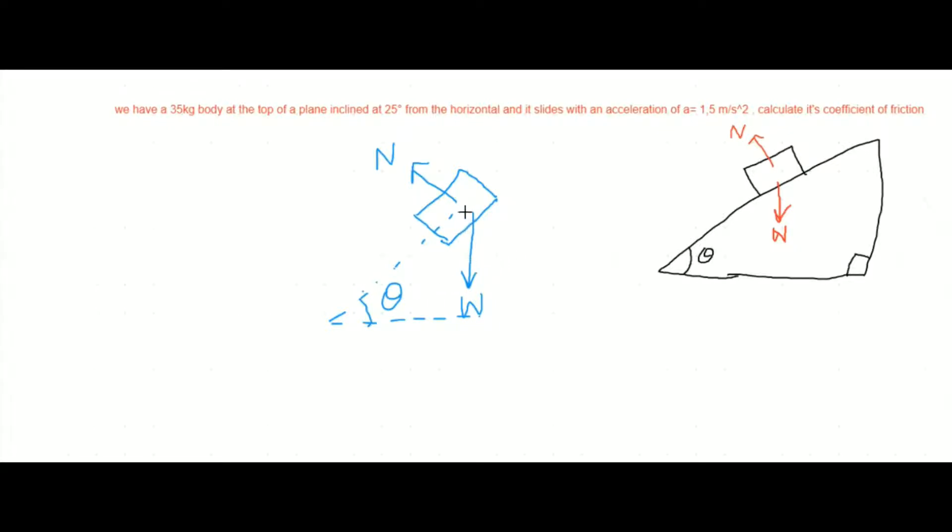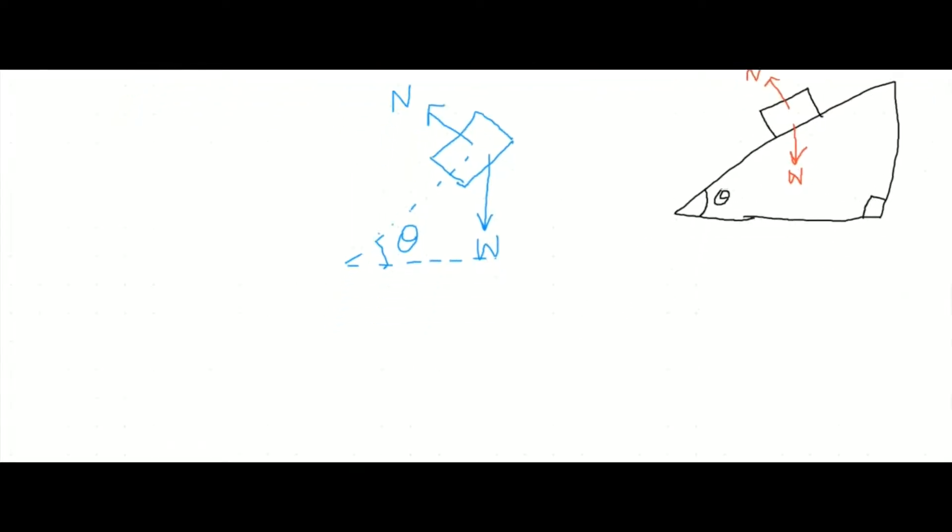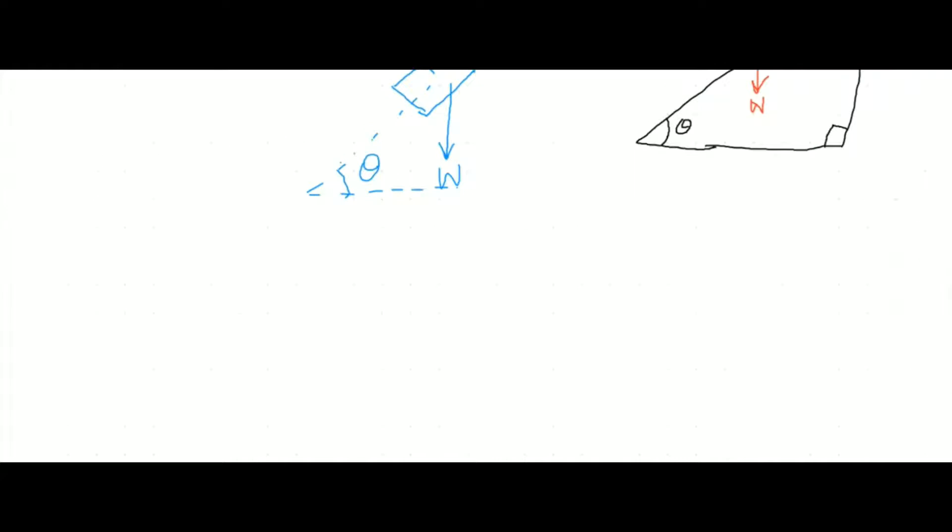Now since we have to equate the forces in different directions, that is horizontal and vertical, first we need to factorize this W in two forms which is horizontal and vertical components. Since this is an angle of theta, along the plane we will have a force of W sin theta and towards the down we will have a force of W cos theta while the normal reaction remains as it is. So these are the forces which includes normal reaction and the force due to gravity.